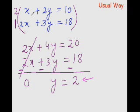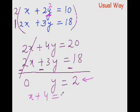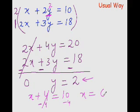We have found the value of y. Now substitute this value of y into any of the two equations to get the value of x. Putting y equals 2: x plus 2 times 2 equals 10, which gives x plus 4 equals 10. Subtract 4 from both sides, and you get x equal to 6 — which is the answer: x equal to 6, y equal to 2.